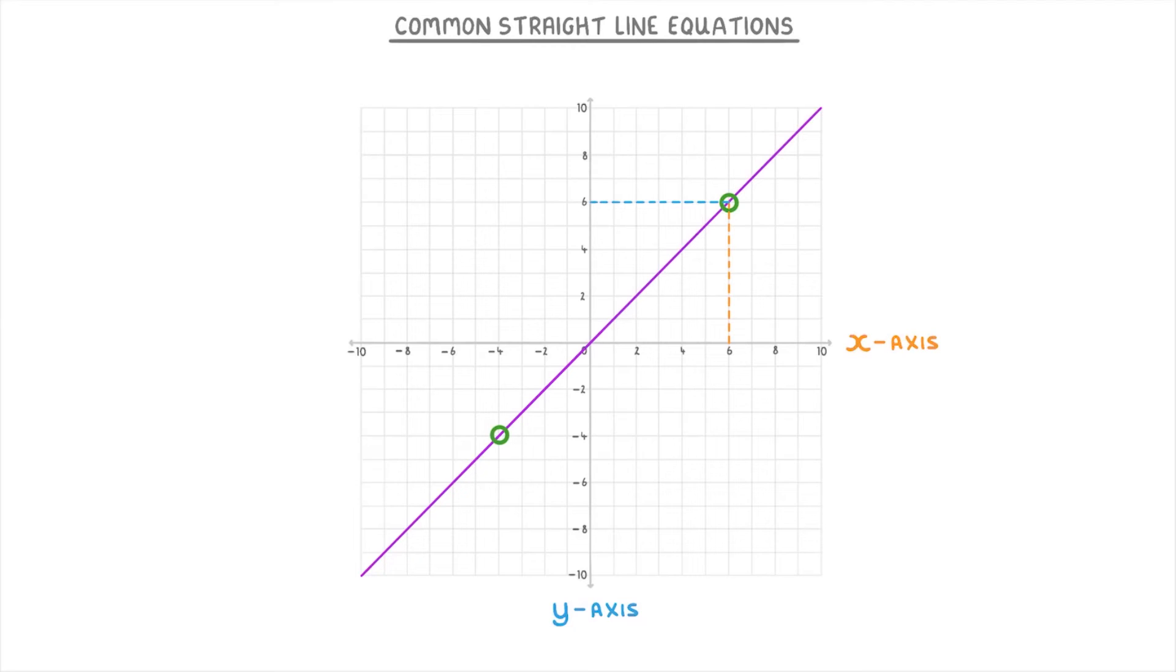Whereas down here, x and y are both negative 4. Because of this, the equation for this line is y equals x. You could also call it x equals y, but we generally put the y on the left when we write line equations.